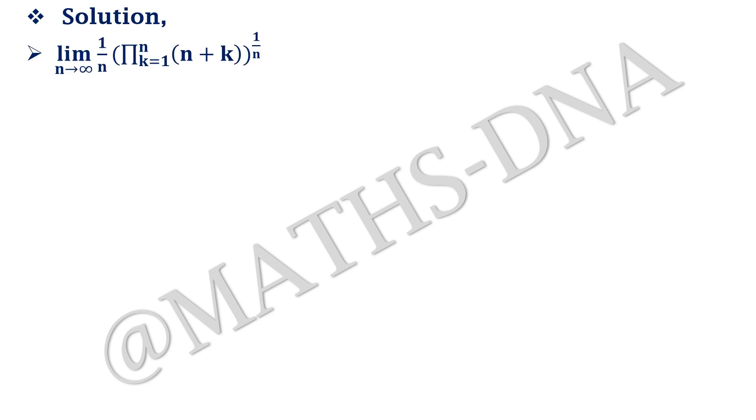Here, the given value of limit is limit n tends to infinity 1 by n product k running from 1 to n, n plus k whole raised to 1 by n. So, our an term will be 1 plus 1 by n, 1 plus 2 by n, 1 plus 3 by n where k is changing till 1 plus n by n.